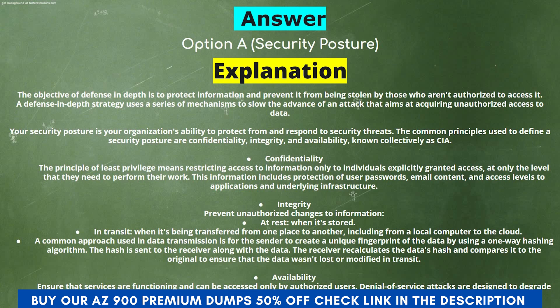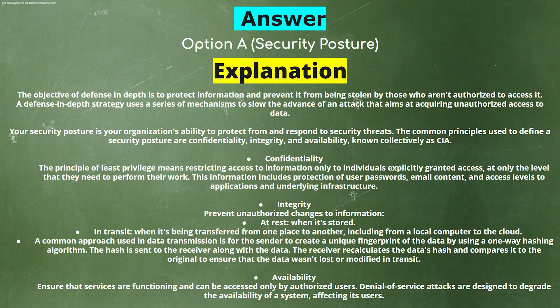The hash is sent to the receiver along with the data. The receiver recalculates the data's hash and compares it to the original to ensure the data wasn't lost or modified in transit. Availability: Ensure that services are functioning and can be accessed only by authorized users. Denial-of-service attacks are designed to degrade the availability of a system, affecting its users.